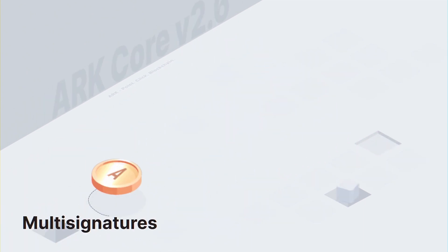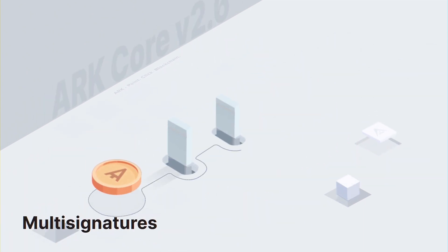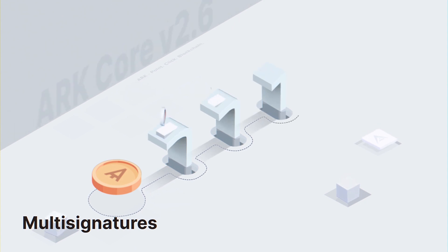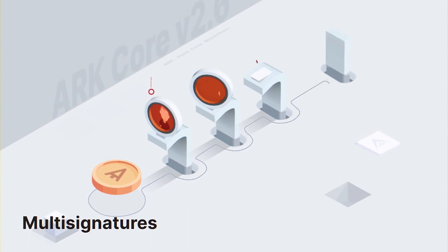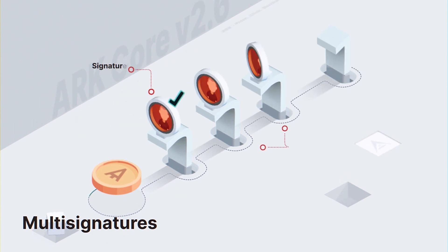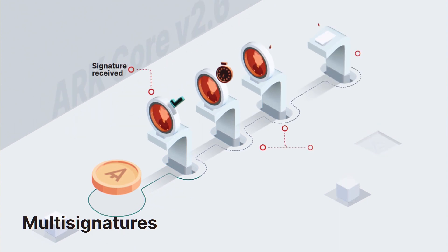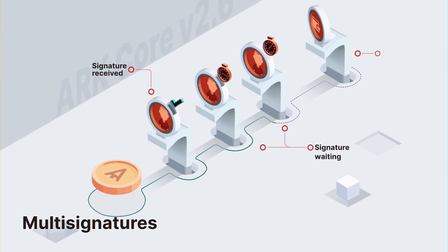Multi-signatures: ArcCore 2.6 allows for multi-signatures, where M of N wallets sign a transaction, making group custody of assets more convenient.